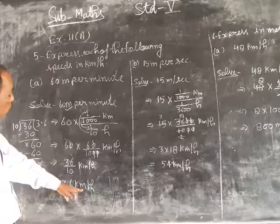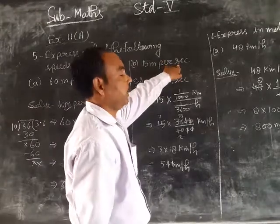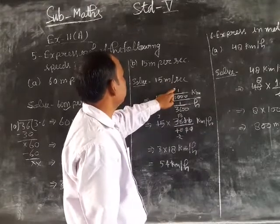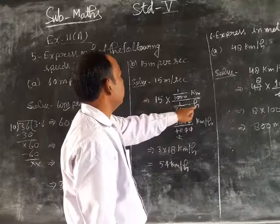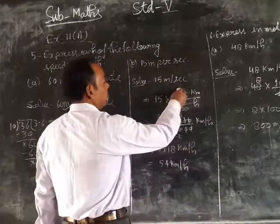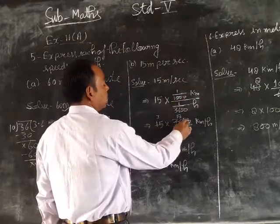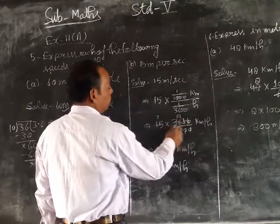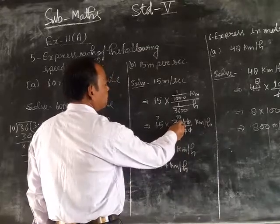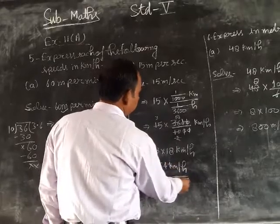Next is 50 meter per second. This was 50 meter per second. Meter per second to kilometer per hour. This is 1 upon 1000 km. Second, 1 upon 3600 hour. This first and fourth, second and third, 50 times 3600 upon 1000 equals 180 kilometer per hour.